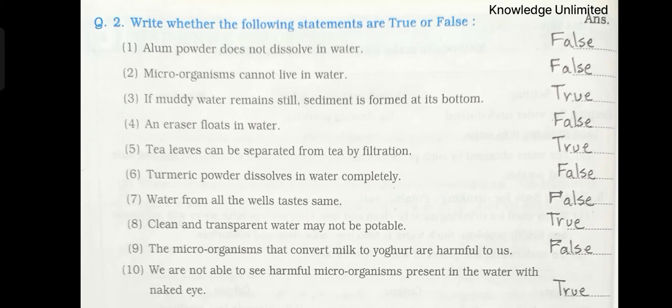Fifth one: Tea leaves can be separated from tea by filtration. Answer: True. Sixth one: Turmeric powder dissolves in water completely. Answer: False. Seventh one: Water from all the wells tastes same. Answer: False. Eighth one: Clean and transparent water may not be potable. True. Ninth one: The microorganisms that convert milk to yogurt are harmful to us. False. Tenth one: We are not able to see harmful microorganisms present in the water with naked eye. That is true.